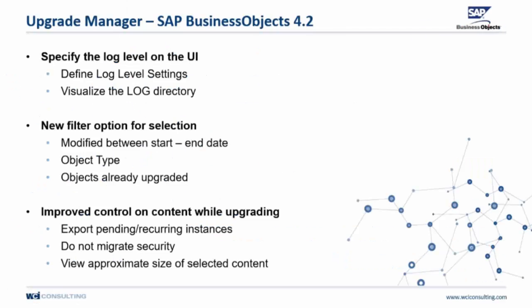A couple of things we're going to talk about. One is the ability to specify the log level in the UI — you can now define the level of security settings, whether it be high, low, or default. You can also visualize the log directory and pick and choose where you want that log directory to be. We also have a new filter option for selections, where you can choose between a modified start and end date, choose the object types, and include objects that have already been upgraded.